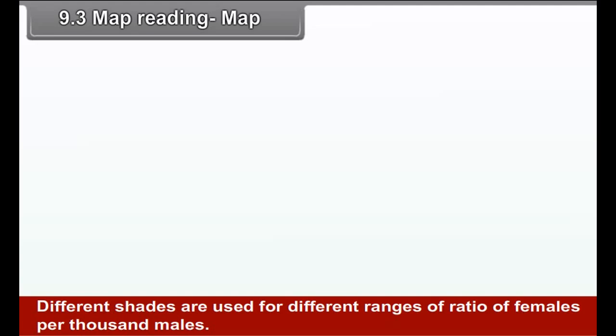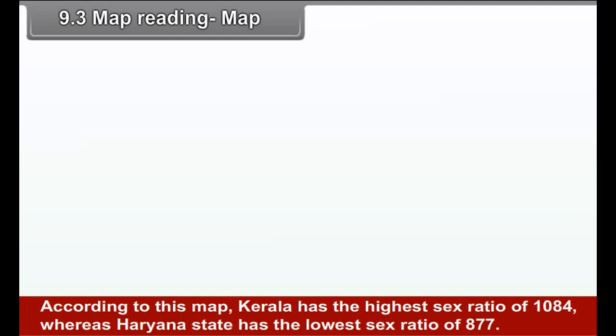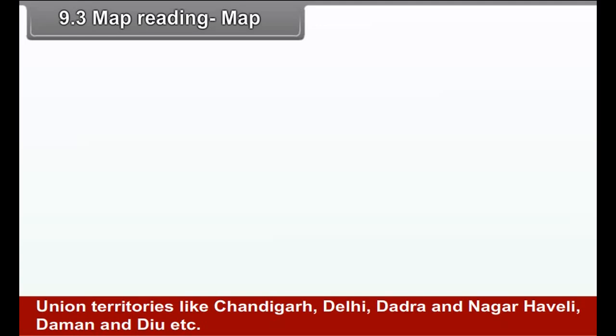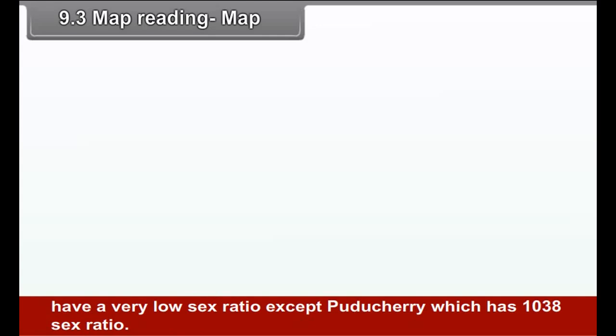Map in figure 9.2b: It is a map of India that has a very specific theme, i.e. sex ratio of each state of India in the year 2011. Different shades are used for different ranges of ratio of females per thousand males. Besides shades of colour, actual sex ratio of each state is also given. According to this map, Kerala has the highest sex ratio of 1084 whereas Haryana state has the lowest sex ratio of 877.